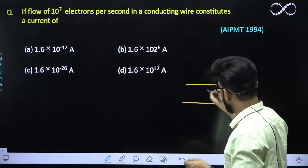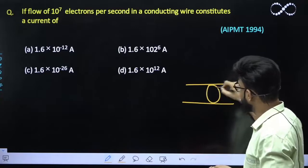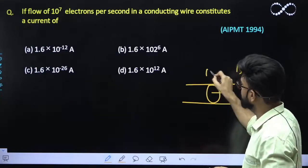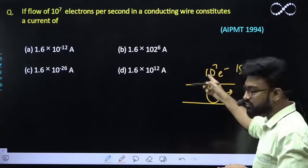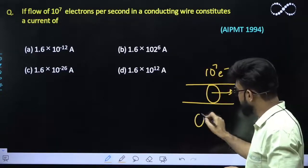You have been given a wire in which in one second, this much of 10 raise to power 7 electrons flow through it. So obviously, if this much of electrons is flowing through it, that means the charge constituting...